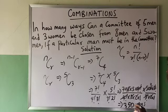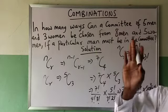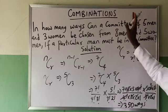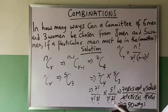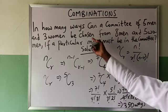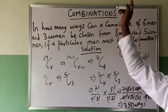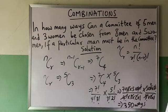The unit 'ways' must be attached to your answer. Whether you are talking about permutation, which is about arrangement, or combination, which is about selection, choosing, or forming, you must attach 'ways' as your unit. Permutation says how many ways to do the arrangement, while combination says how many ways to do the selection or choosing.